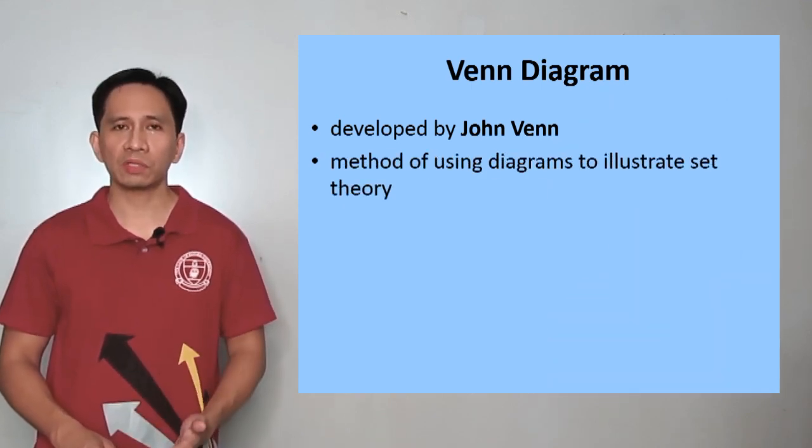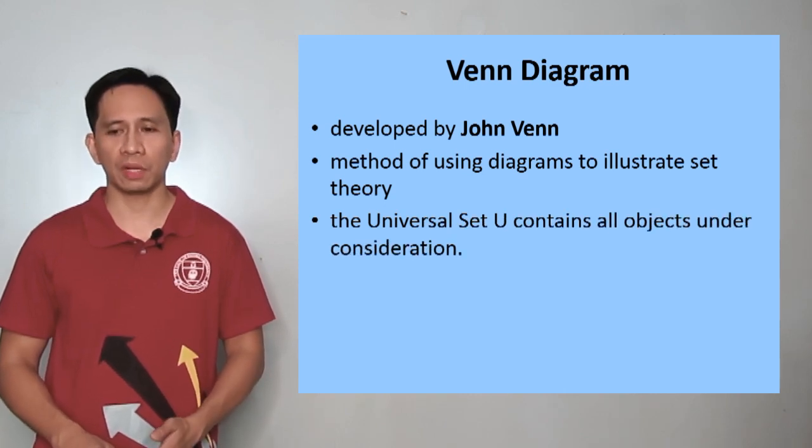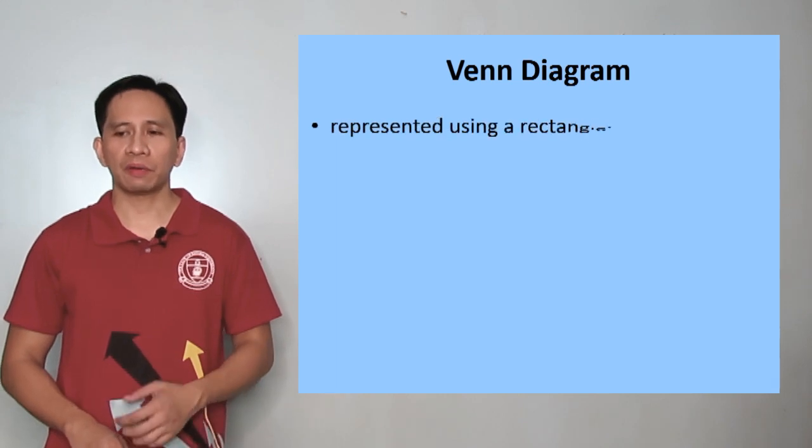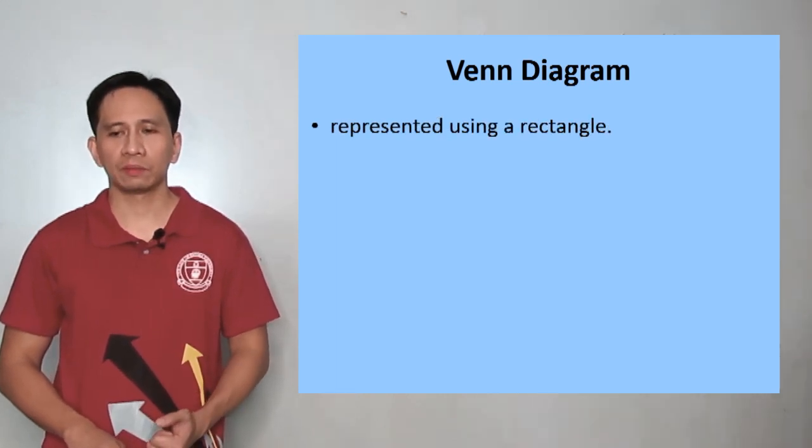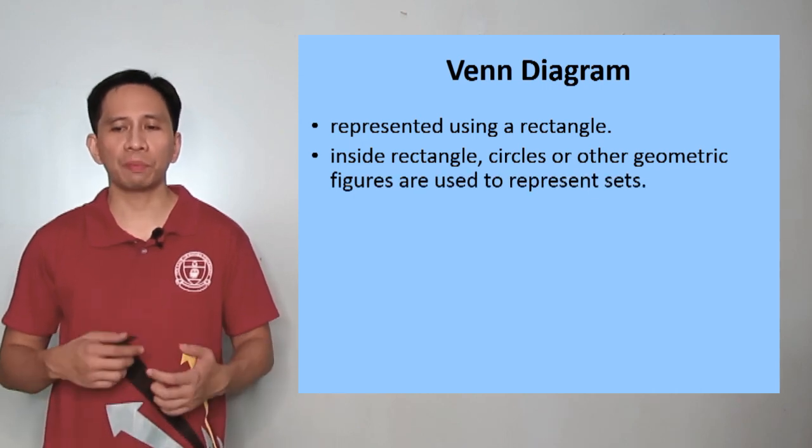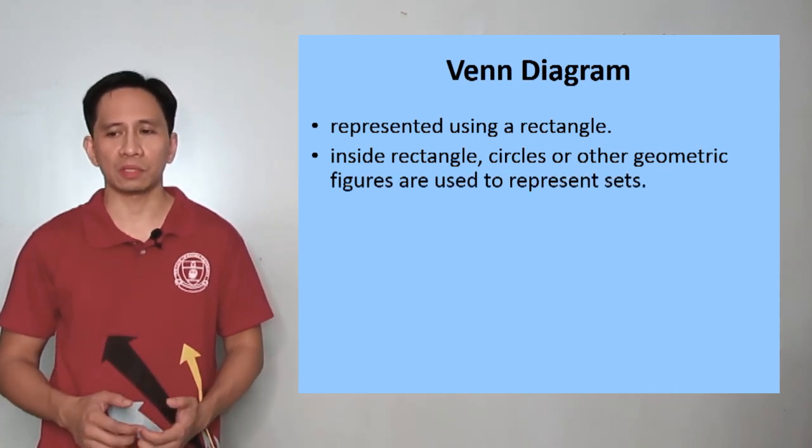The universal set Q contains all objects under consideration. Venn diagrams are represented using a rectangle. Inside the rectangle, circle or other geometric figures are used to represent sets.